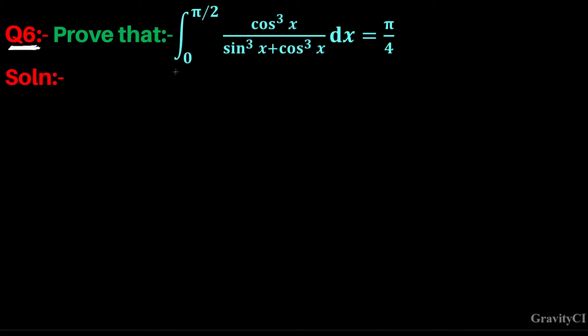Question number 6: Prove that integral 0 to π/2 of cos³x upon sin³x plus cos³x dx equals π/4.